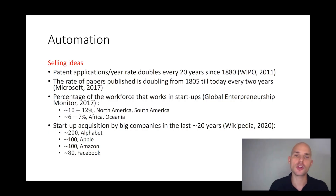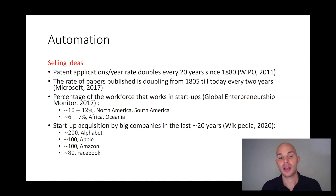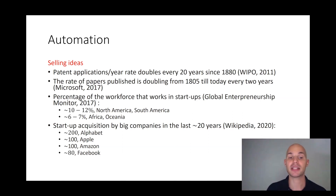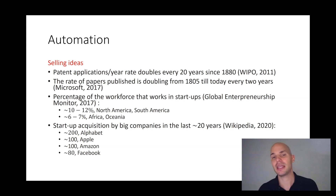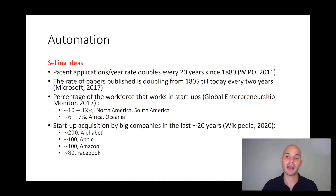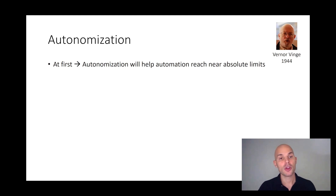The evidence is clear around us: patent applications per year double every 20 years since 1880; the rate of papers published per year has been doubling every two years from 1980 to today; the percentage of the workforce working in startups in 2017 was 10 to 12 percent in North and South America and 6 to 7 percent in Africa. Startup acquisitions by big companies in the last 20 years total around 200 for Alphabet, around 100 for Apple, around 100 for Amazon, and around 80 for Facebook — all essentially buying and acquiring ideas along with their patents.